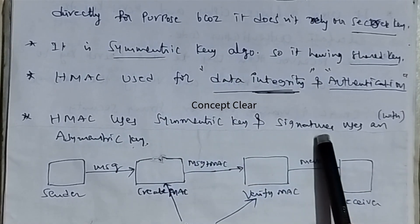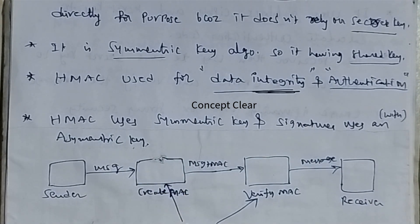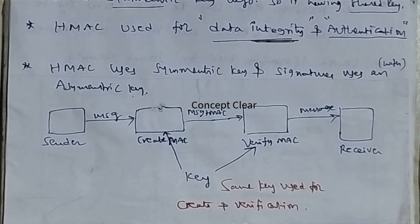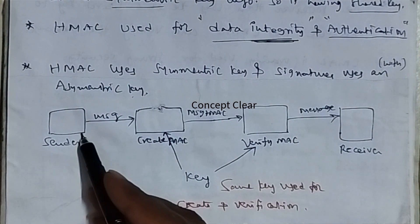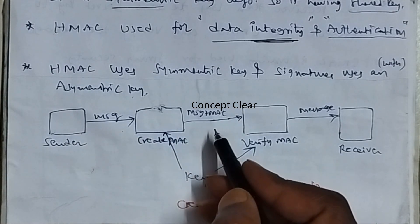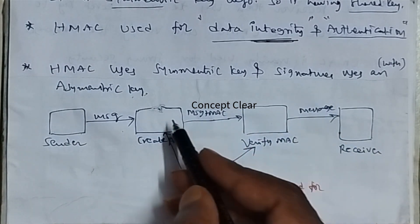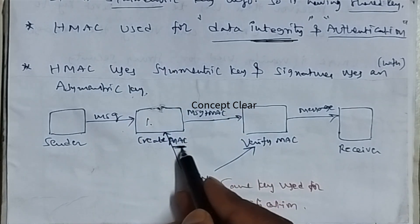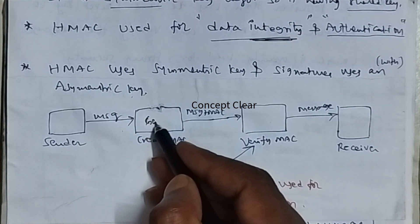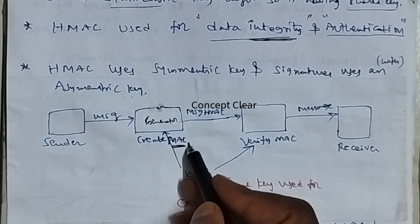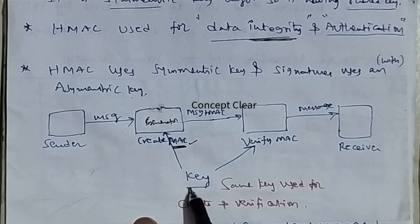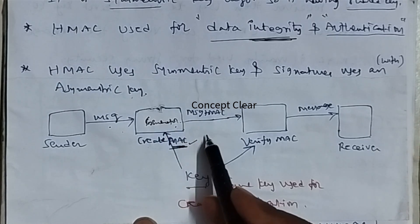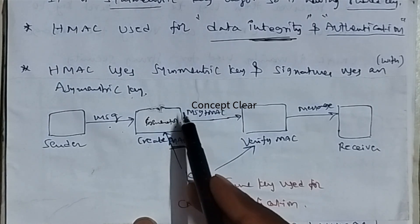Here is the block diagram for the HMAC algorithm — hash-based message authentication code. The sender sends a message. In the HMAC block, a MAC code is generated with the help of the secret key. The plain text message is processed with the secret key to produce the MAC code, which is then transferred from the sender side to the receiver side.